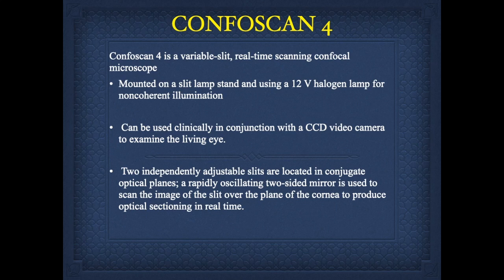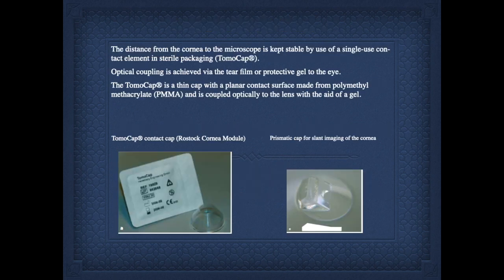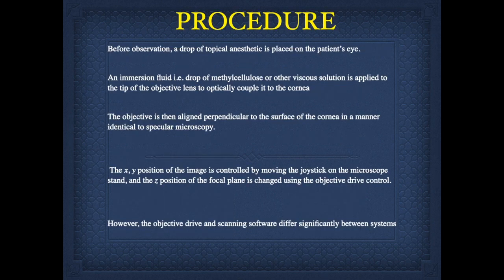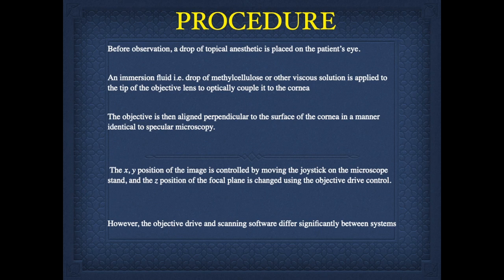Coming to CONFOSCAN4, it is a variable slit real-time scanning confocal microscope. It can be mounted on a slit lamp stand and uses a 12V halogen lamp for non-coherent illumination. This optical cap can be used for contact imaging. For the procedure, a drop of topical anesthetic is placed on the patient's eye and an immersion fluid is applied to the tip of the objective lens to optically couple it to the cornea. This is controlled by moving the joystick on the slit lamp microscope and the Z position of the focal plane can be changed using the objective drive control, hence imaging can be obtained.